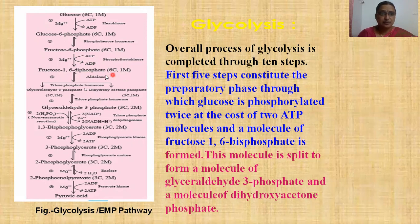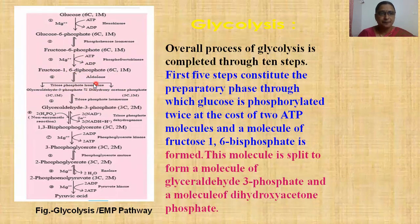Fructose-1,6-diphosphate with 6 carbon atoms is split into two 3-carbon molecules: glyceraldehyde-3-phosphate (1 molecule) and dihydroxyacetone phosphate (1 molecule). In the presence of enzyme triose phosphate isomerase, fructose-1,6-diphosphate is split by aldolase enzyme into these two 3-carbon compounds.